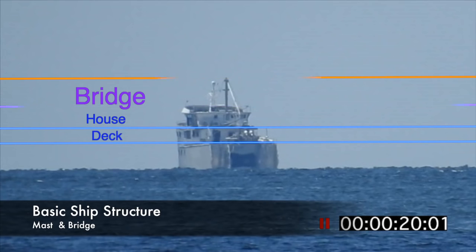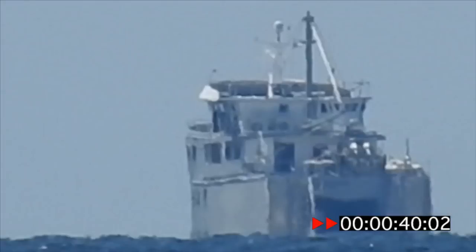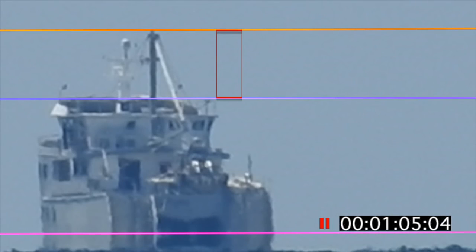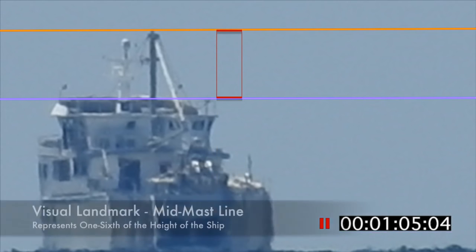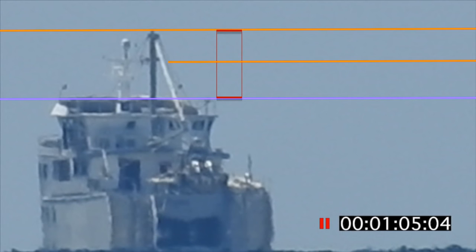It is clearly very large. The mast represents approximately one-third of the full height of the boat. Instruments and equipment attached to the mast structure create a visual line that divides the mast approximately in half. This interval therefore represents approximately one-sixth of the overall height over the water.